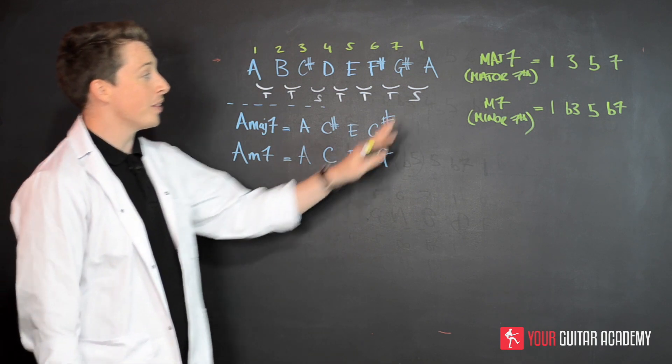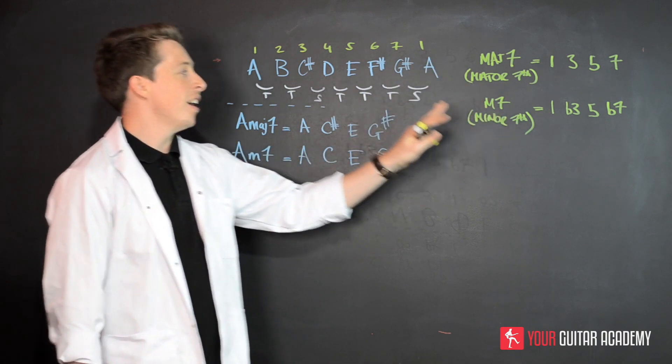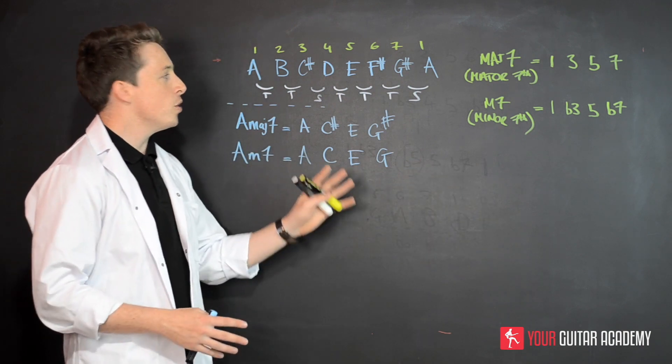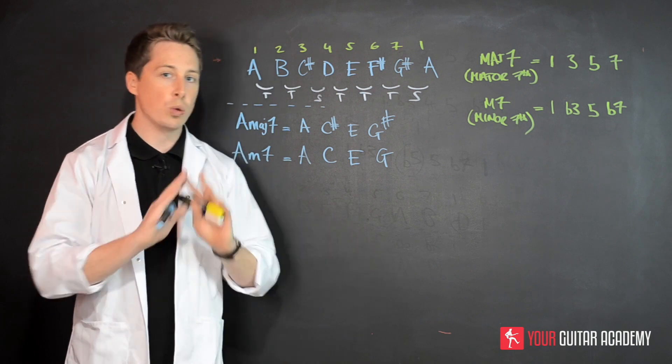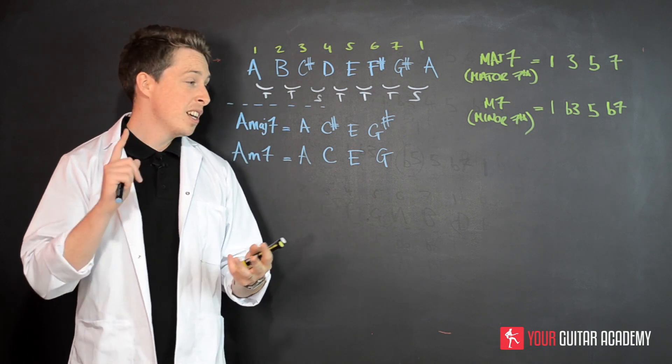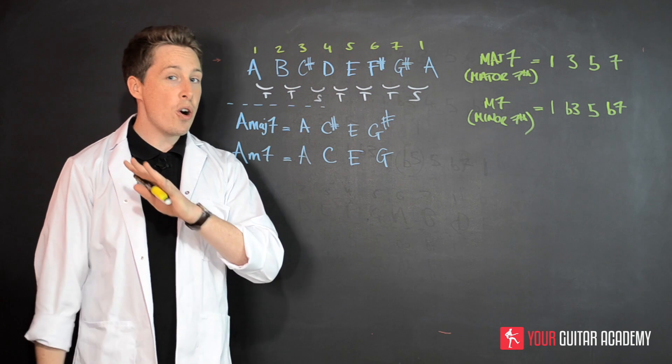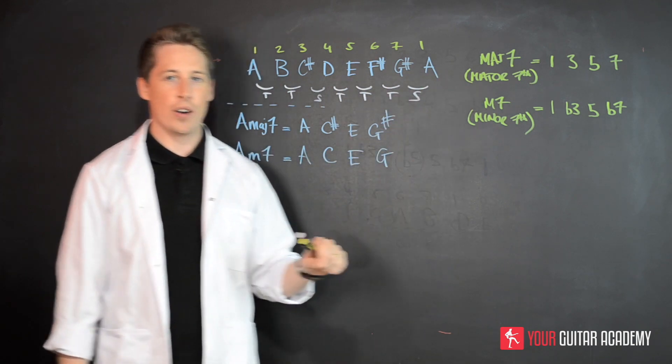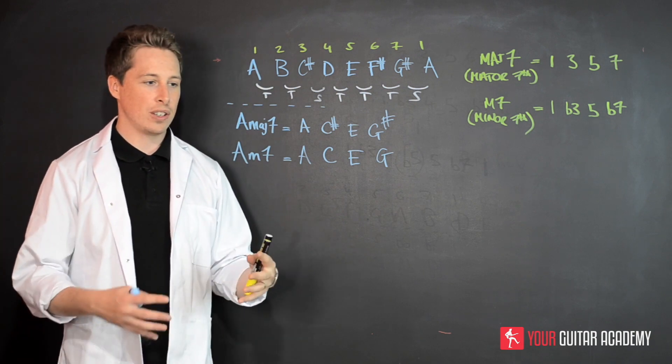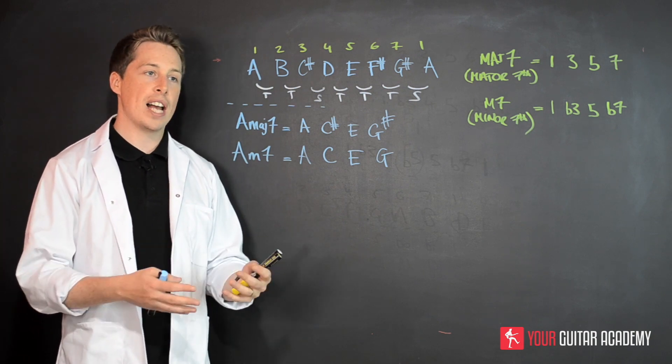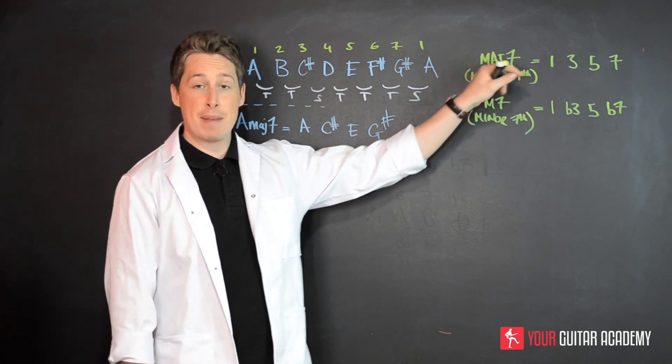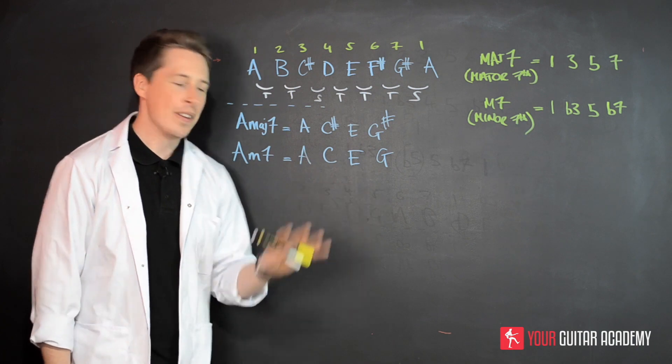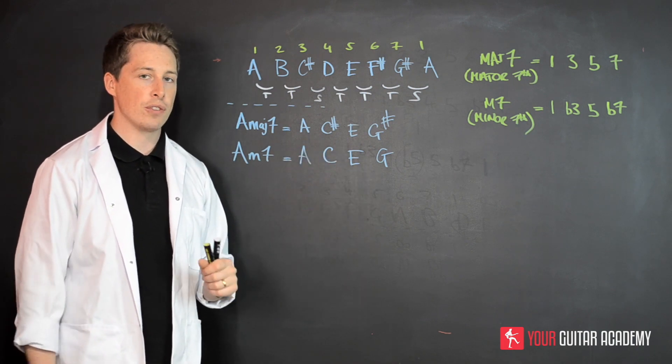And one thing to bear in mind as well with seventh chord theory is that jazz players, if you're a jazz guy out there and you just love listening to jazz, you almost ignore triads altogether, those basic majors, minors, those basic diminishes. You're not really ever going to play it. If you see a major written out on a chord, on a chord diagram or a chord chart in jazz, really, they mean major seventh or minor seventh, that's your base level in jazz. So this is really crucial theory if you really like that kind of genre.